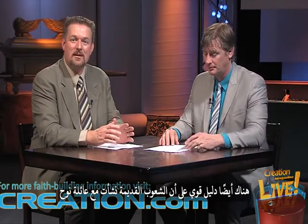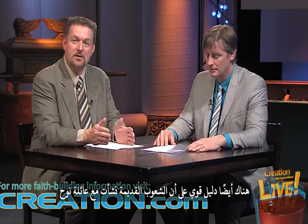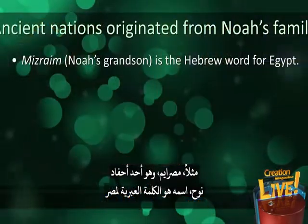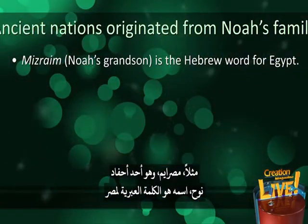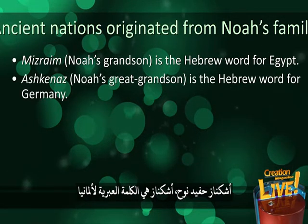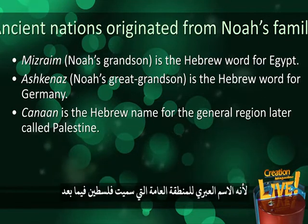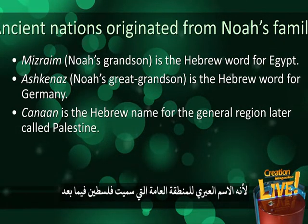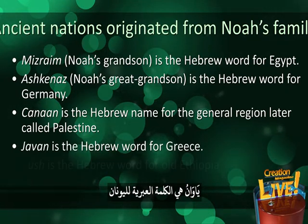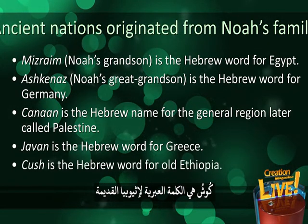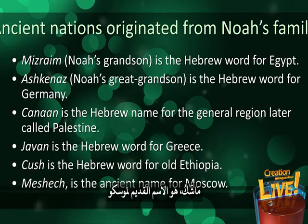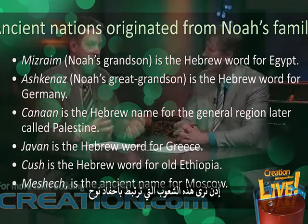There's also strong evidence that the ancient nations originated with Noah's family. For example, Mizraim — one of Noah's grandsons — is the Hebrew word for Egypt. Ashkenaz, a great-grandson of Noah, is the Hebrew word for Germany. Other grandsons include Canaan — the Hebrew name for the region later called Palestine — Javan, the Hebrew word for Greece, Kush, the Hebrew word for Old Ethiopia, and Meshech, the ancient name for Moscow. You see these nations tied back to the grandsons of Noah.